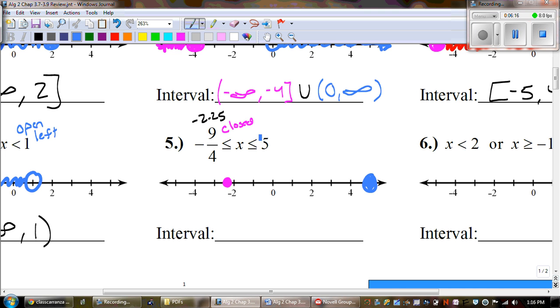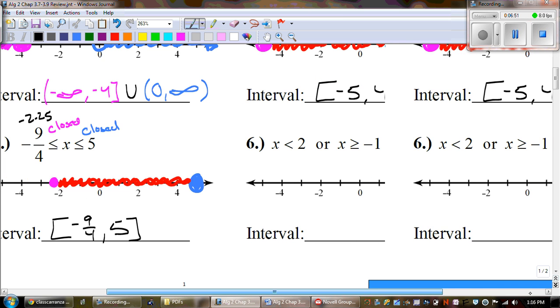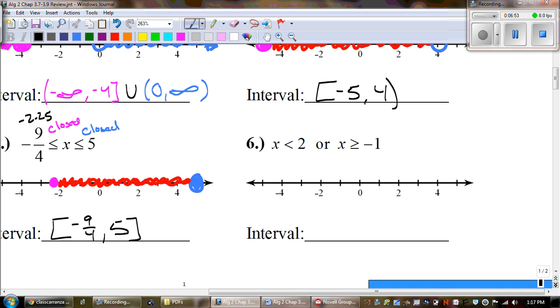And then at positive five, we are also closed. Mr. Grice, how do you know that we're closed? Well, when you've got the line underneath it, it automatically means that it's closed. And just like we talked about in number three, when it's written like this, this is an and we shade the middle. So for interval notation, it's a bracket negative nine fourths. And then also at five, we have another bracket.